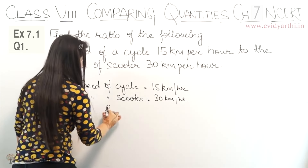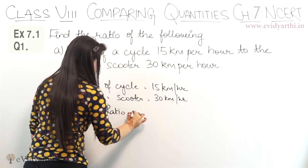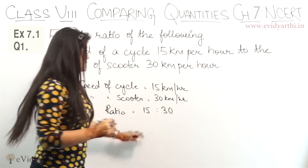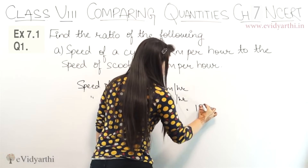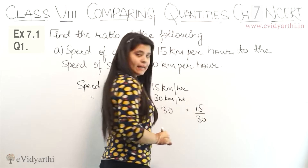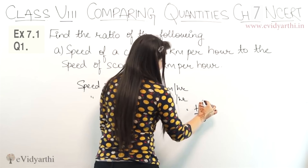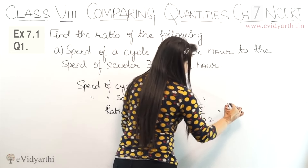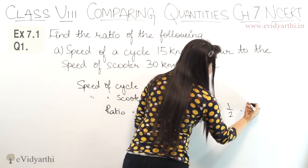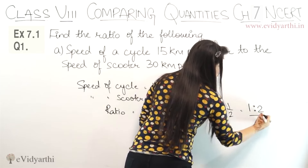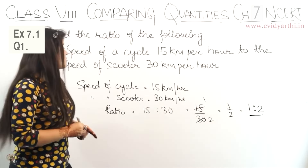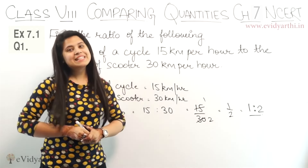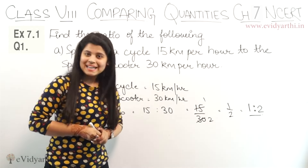The ratio will be 15 to 30. We can write this as 15 upon 30 and then simplify: this will be 1 and this will be 2. So the answer is 1 upon 2, or we can write it as 1 ratio 2. This is the way we find the ratio. This was part A.